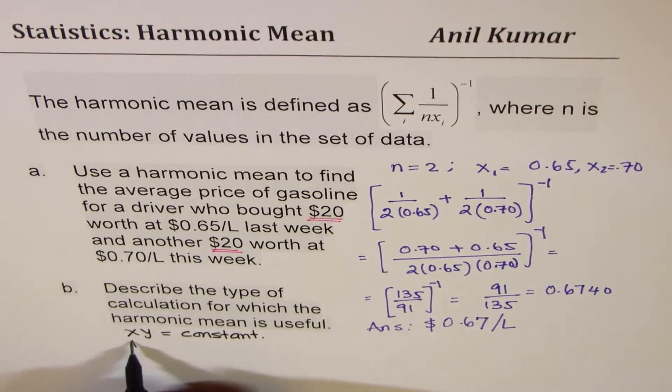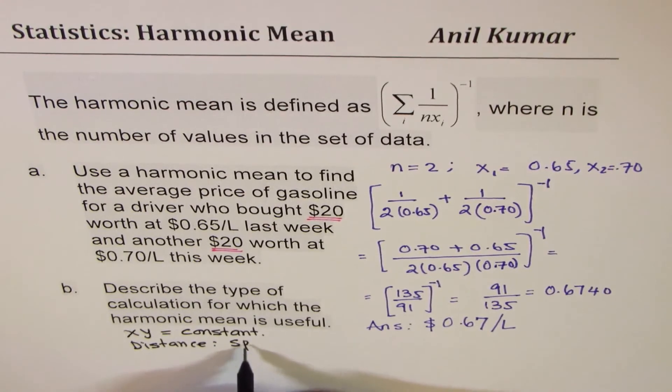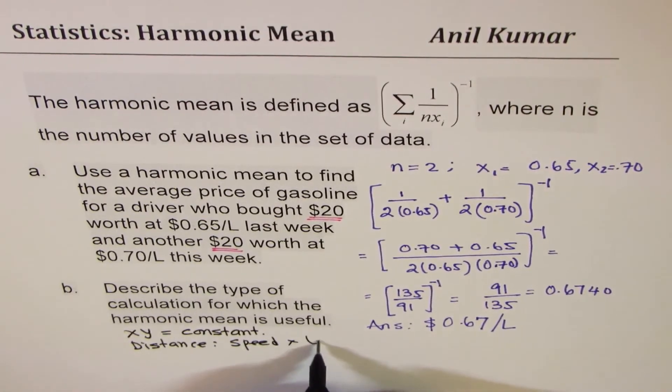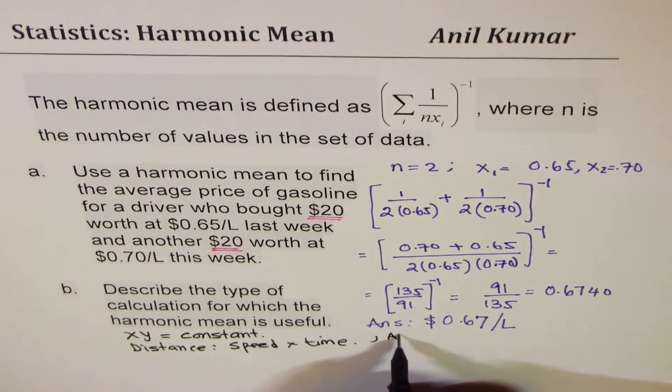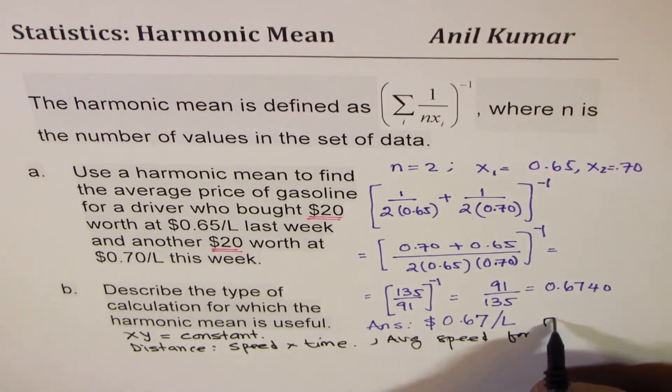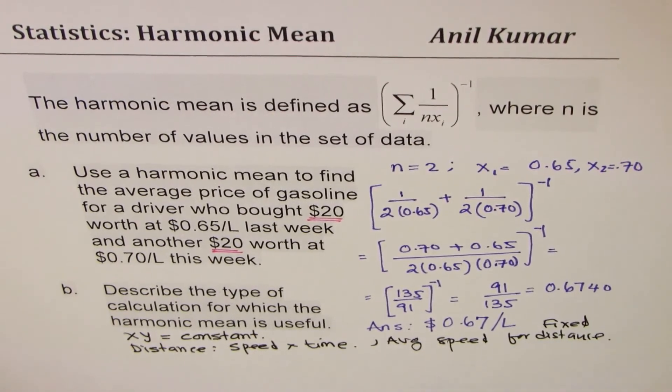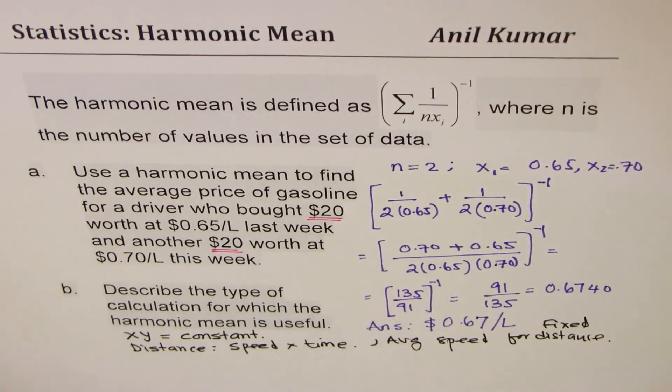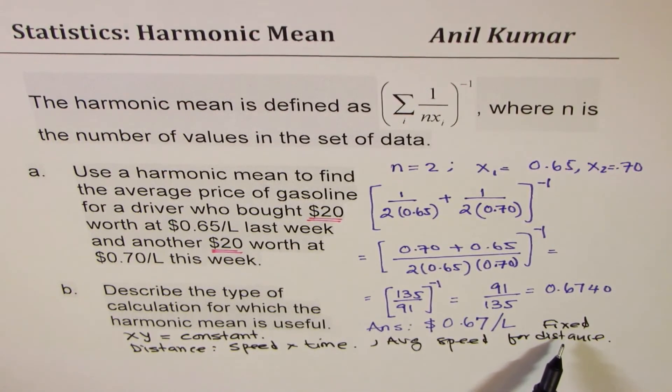For example, we know distance is speed into time. So, if you want to calculate average speed for fixed distance, in that case, harmonic mean is very good and useful. So, for a particular distance, if you want to calculate average speed, you could do this way.